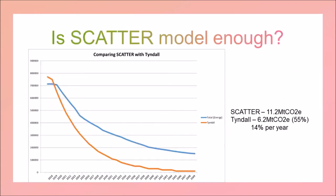Is SCATTER enough? The action plan alludes to another modeling tool developed by the Tyndall Centre at the University of Manchester. They took IPCC targets from December 2018 and divided them among all UK local authorities. Between 2018 and 2049 the carbon dioxide budget for the Chichester District is 6.2 megatons under the Tyndall model, but the SCATTER model gives 11.2 — almost twice as much. So all those hard measures are still not enough. The Tyndall model advocates a 14% annual reduction over 32 years, rather than the 10% over five years that the District Council is proposing.